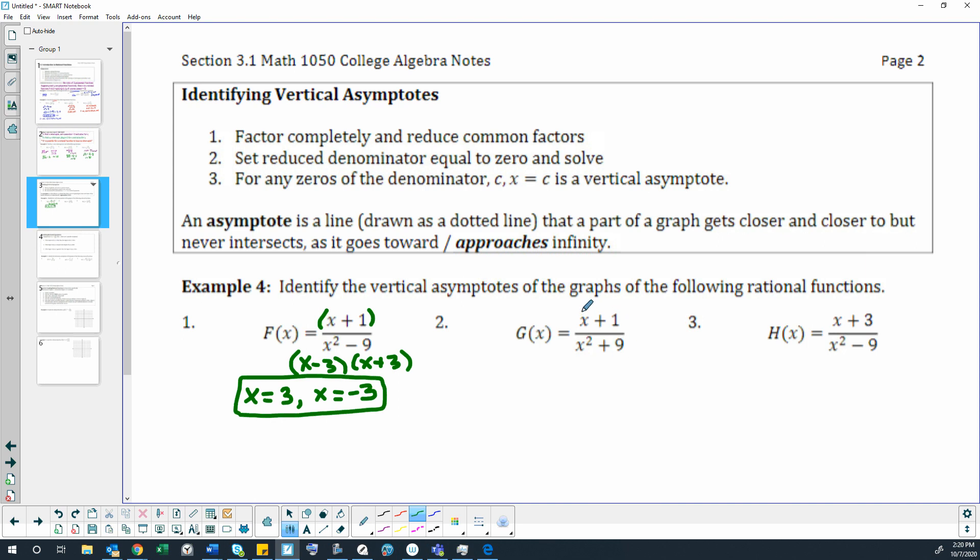Next one we would factor and reduce. Well, this doesn't factor and this doesn't factor. After it doesn't factor or reduce, we would just set that equal to 0 and solve it. That means that we would get imaginary answers. So there are no real solutions, and since there's no real solutions, there's also no vertical asymptote.